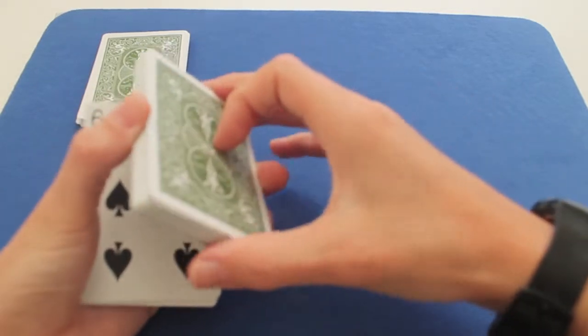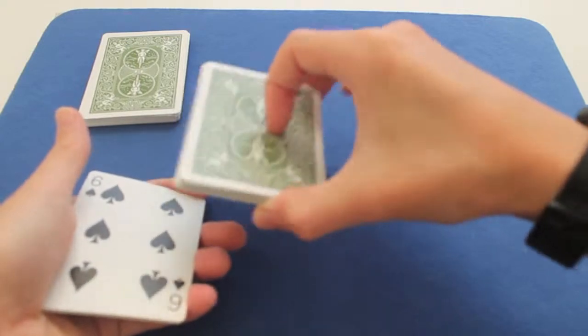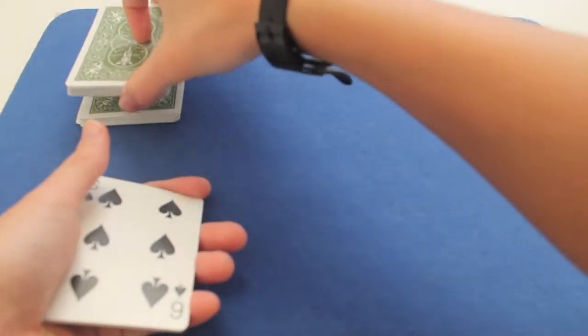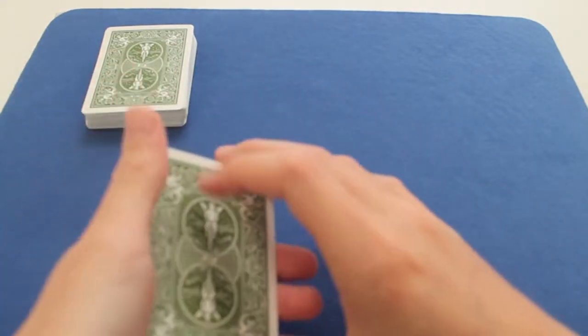And you ask them if they saw their card. And they'll say yes. And while they're saying yes, you put the top pile on the bottom pile like this. And you say, I have one, two, three, four, five cards.